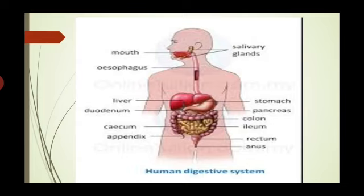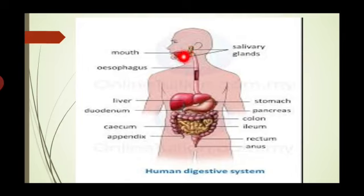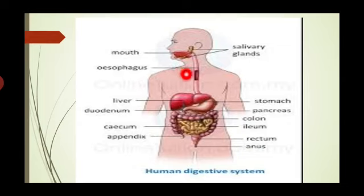The digestive system performs several activities. The first is ingestion — taking in food through the mouth — which must occur before anything else. Next is mechanical digestion, where large pieces of food are broken into smaller pieces that enzymes can act upon. Mechanical digestion begins in the mouth with chewing or mastication, and continues with churning and mixing actions in the stomach.